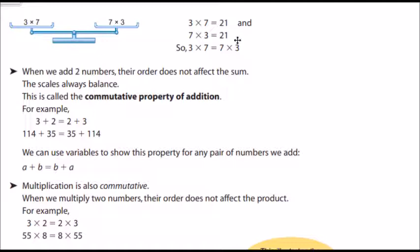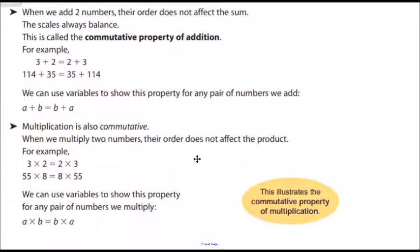We also can see in this last balance scale that multiplication is also commutative. When we multiply two numbers, their order also does not affect the product. 3 times 2 and 2 times 3, both ways I'm going to get 6. 55 times 8 and 8 times 55, I'm still going to get the same thing. Think about this when we use our multiplication charts, where some people like to go with the first number across the top and then go down, where other people like to go down and then move sideways. You both get to the same answer, no matter which way you choose.